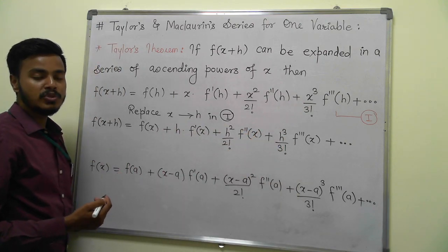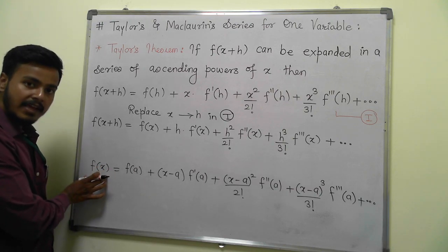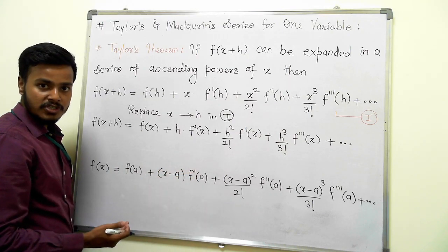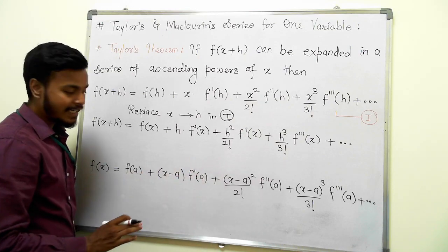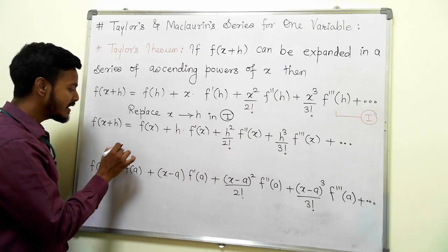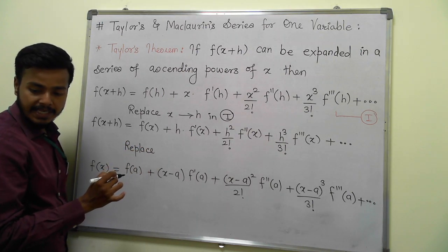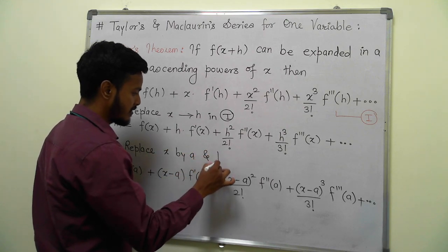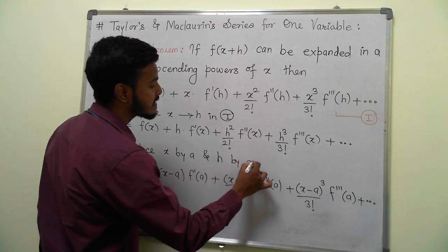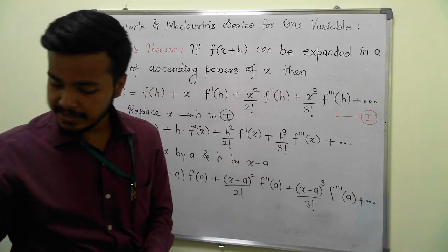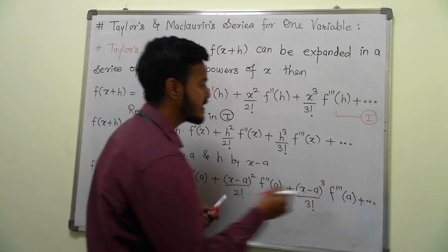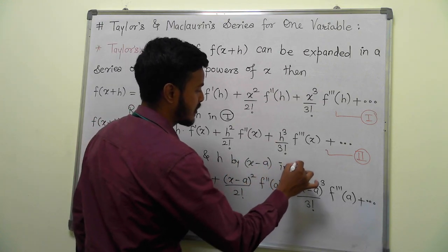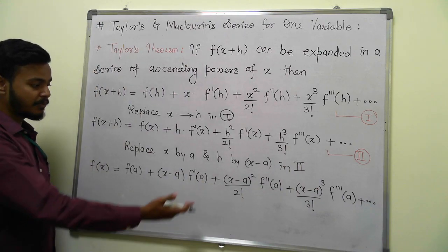But sometimes what happens? Sometimes you have to expand the function f(x) in ascending powers of x minus a, or to find the Taylor's series expansion of the function around some point x equals a. In that case, what you need to do is you just need to replace x by a and h by x minus a. Say this is to be your equation number 2. If this is your equation number 2, then you can do this kind of replacement to get the Taylor's series around the point x equals a.